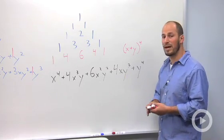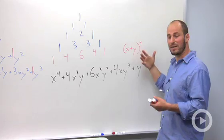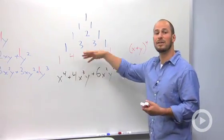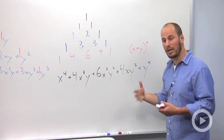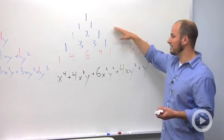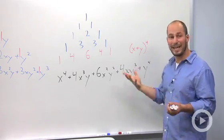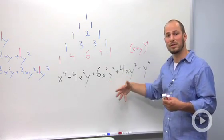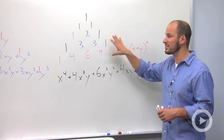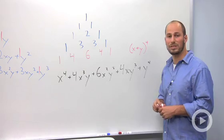We could continue on to do this for x plus y to the fifth, sixth, seventh. We would just need to add on more and more rows. Obviously this is a little bit easier to use for smaller powers on x plus y. Once we get to x plus y to the tenth, we're going to be writing a lot of rows. But as long as we're dealing with smaller powers, Pascal's triangle can be a really cool resource to help us out.